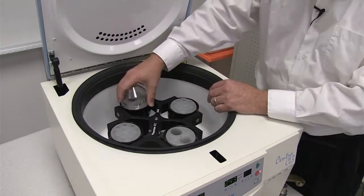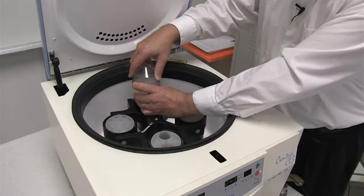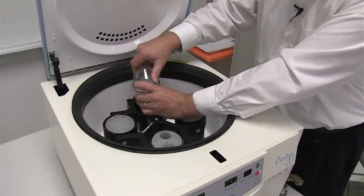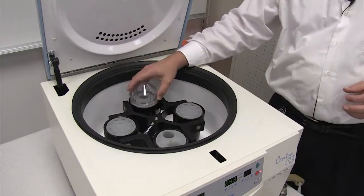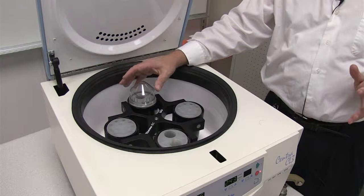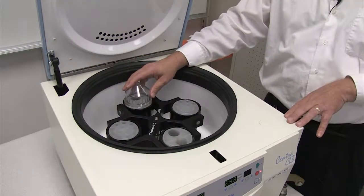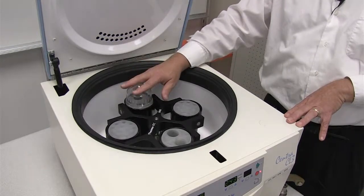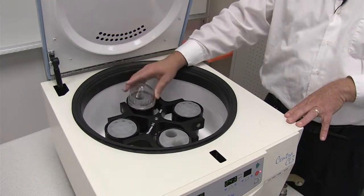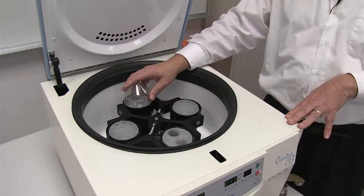These carriers can also be fitted with these aerosol containment caps. If you were spinning blood or a hazardous liquid, you can use these caps so that if the tube cracks or the lid would crack or something would happen to the tube that contained your liquid, it stays in the carrier and doesn't release it into the centrifuge.